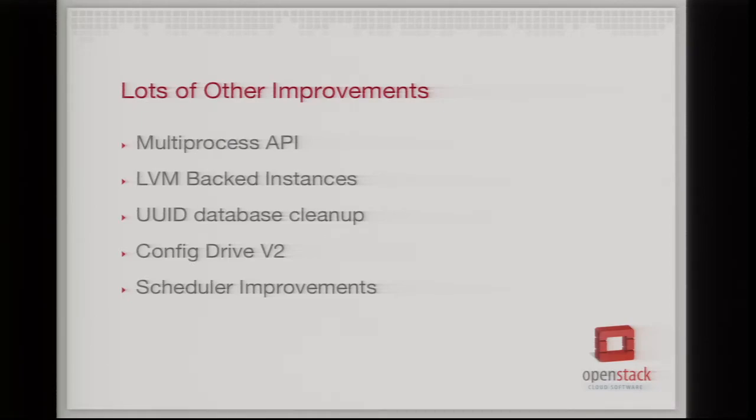A few more highlights from Folsom: the API server can now run multiprocessed for better scaling; we have an option for LVM-backed images instead of QCOW2 for the libvirt backend; we did a lot of database cleanup converting everything to UUIDs since volumes in Essex had integer IDs which don't scale well across data centers. There's also work on config drive, which lets you configure an instance without needing network connectivity as an alternative to the Amazon-style metadata server. And we made improvements to the scheduler with different filters, different configuration options, and affinity support.